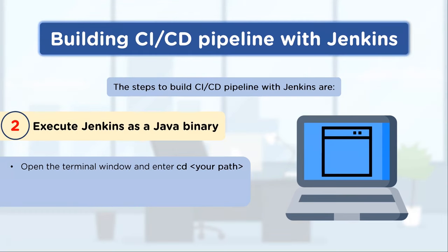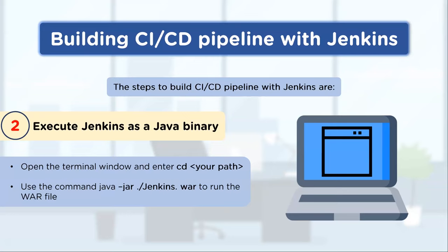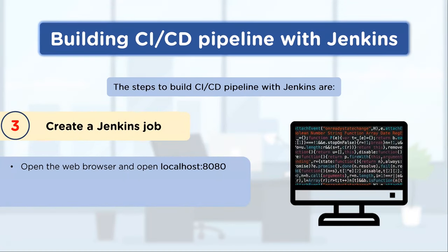Once downloaded, navigate into the Jenkins folder using the CD command and run the command: java -jar jenkins.war. WAR and JAR files are executable artifacts, so you can run them with the Java command without any web container or application container. Once that is done, open your web browser and navigate to localhost:8080 — Jenkins uses port 8080, just like Apache Tomcat.